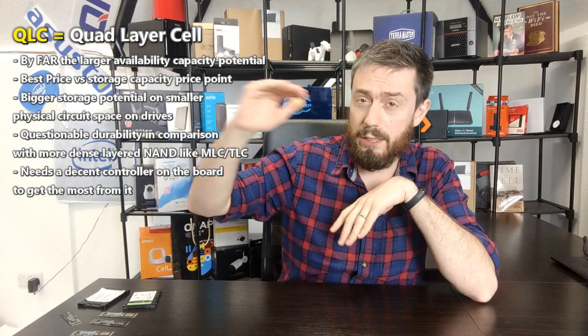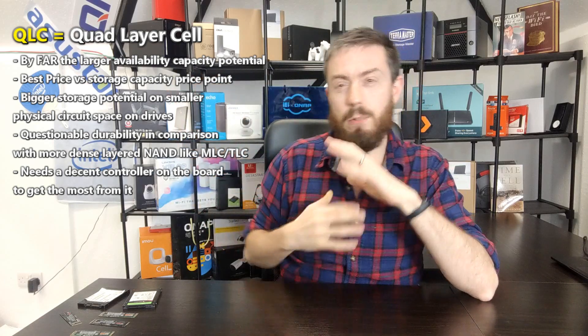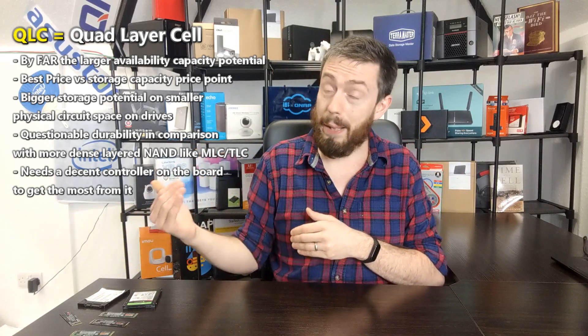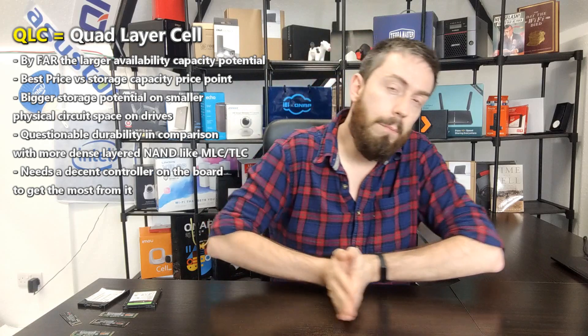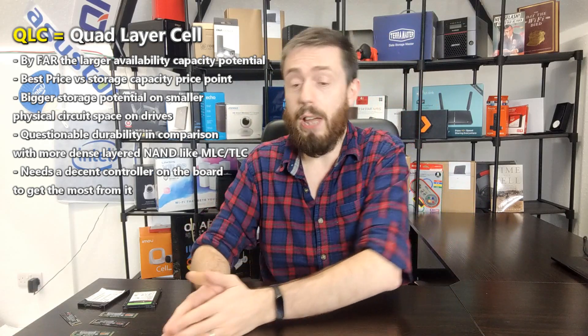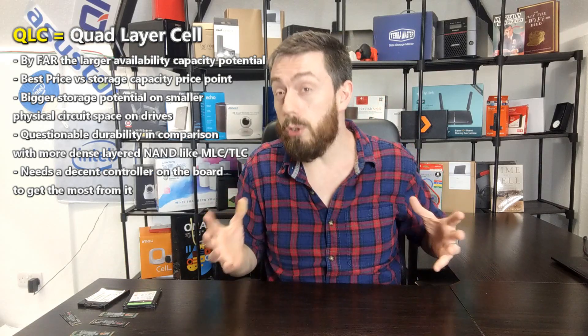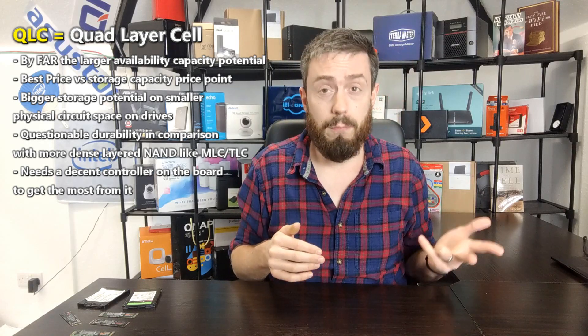QLC — Quad Layer Cell — is the final type, and we're not seeing much of it yet. With four bits per layer across four layers, you get insane capacities — SSDs are now arriving at very high storage figures. But with that comes loss of durability and performance. The IOPS and data access speeds suffer, and that's why the market has shifted more toward TLC and 3D V-NAND than QLC. Things may change as capacities grow and chip distribution improves.